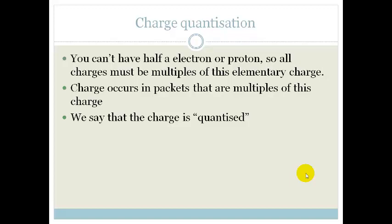What does that mean? It just means that it can only be in a certain number. So it can be 1 times 1.6 times 10 to the minus 19, or 2 times 1.6 times 10 to the minus 19.